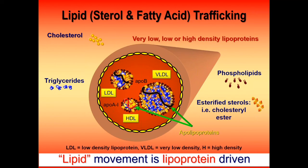If they floated, they were very low density. If they sunk to the bottom of the centrifuge tube, they were high density, and those in between were low density. Also take a quick look: the protein wrapping the LDL and VLDL particles is called ApoB, short for apolipoprotein B. And the protein depicted in red here, wrapping the high-density lipoprotein, is ApoA1. We'll revisit those terms as we go on.